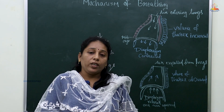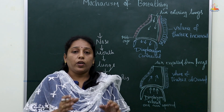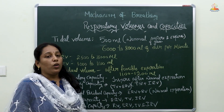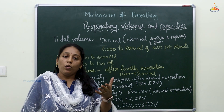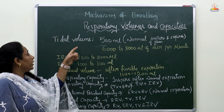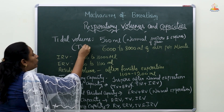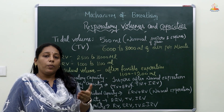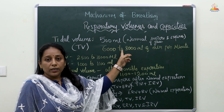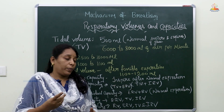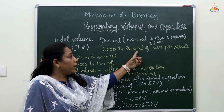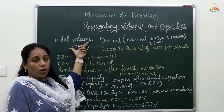Now we will see how much air is inhaled and expelled for a normal human being — the respiration volumes and capacities. The volume of air inhaled and exhaled is expressed as tidal volume (TV). For a normal person, inhale and exhale of air is approximately 500 ml. A healthy person can inhale 6,000 to 8,000 ml of air per minute — that is the tidal volume.